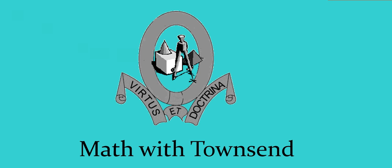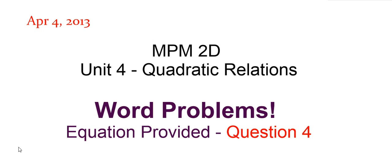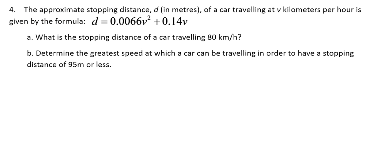Hi there, my name is Miss Townsend and I love math. Welcome to Math with Townsend. This video is for grade 10 students who are studying quadratic relations. This is question number four of a series of word problems that we're working on. The question says the approximate stopping distance d in meters of a car traveling at v kilometers per hour is given by the formula d = 0.0066v² + 0.14v.